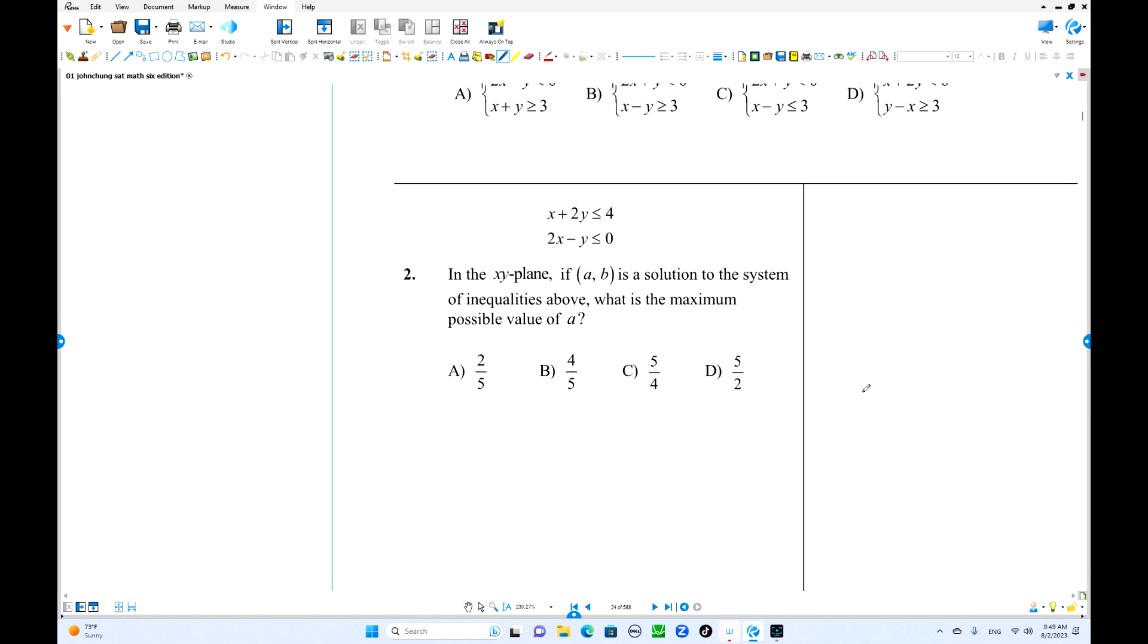One more, number 2. X plus y is less than or equals to 4 and 2x minus y is less than or equal to 0. A, B is a solution. What is the maximum possible value of A? This time x coordinate. You know that the whole situation occurs on this intersection. Just find out the intersection.